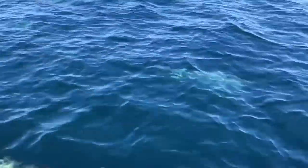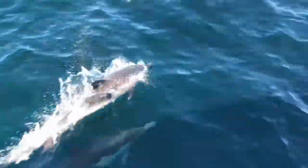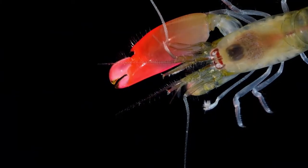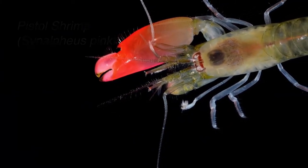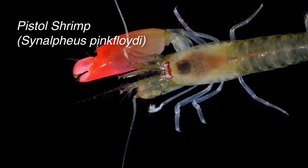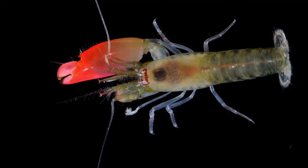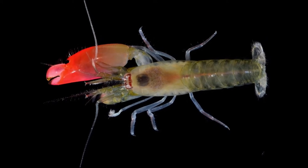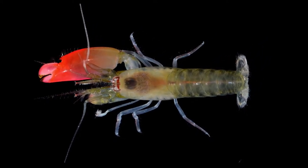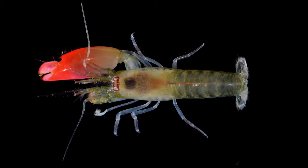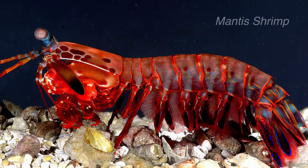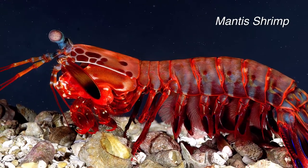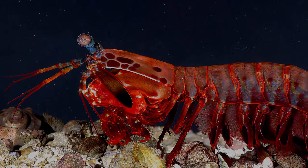Dolphins are another species that use bubble nets for feeding. Another mechanism involving cavitation is used by the pistol shrimp — the fast snapping of its claw generates not only a loud click, but a shockwave from a collapsing burst of bubbles that will instantly kill its prey. The mantis shrimp is another animal that uses cavitation to stun and feed on its prey.